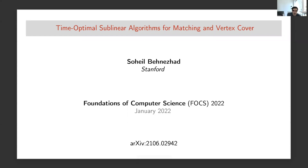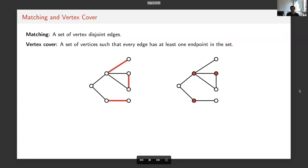Hello everyone, this is Sohail Benhajan and today I'm going to talk about sublinear time algorithms for matching and vertex cover. Let me start by reminding you what matchings and vertex covers are. A matching is a subset of vertex-disjoint edges — here the red edges form a matching in the graph. And the vertex cover is a set of vertices such that every edge has at least one endpoint in the set.